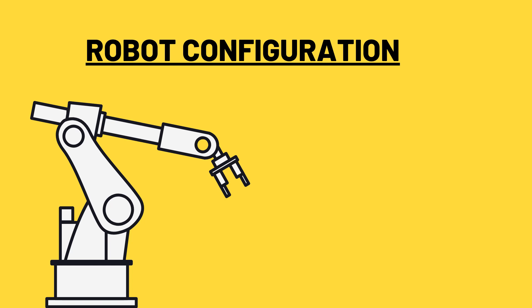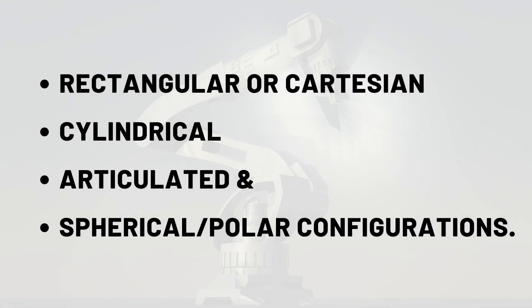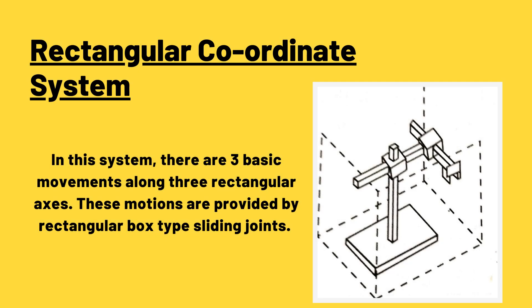As far as robotic configuration is concerned, corresponding to the reach of the first three joints in the robot, we have four basic configurations: first is rectangular or Cartesian, second is cylindrical, third is articulated, and fourth is spherical or polar. Let's understand them one by one.